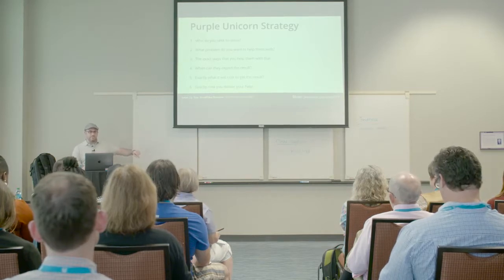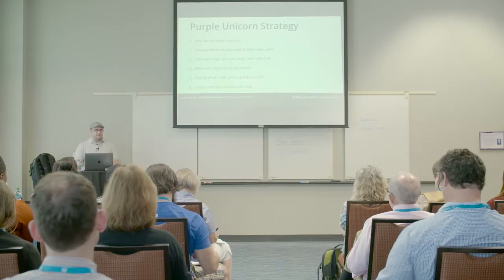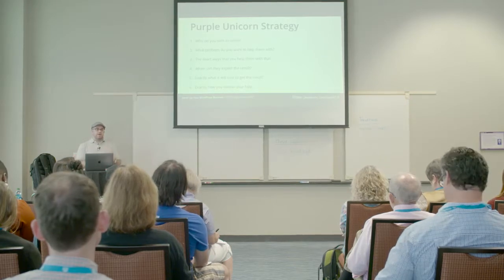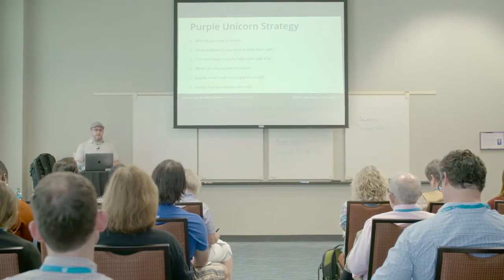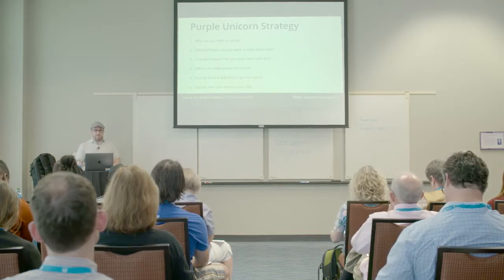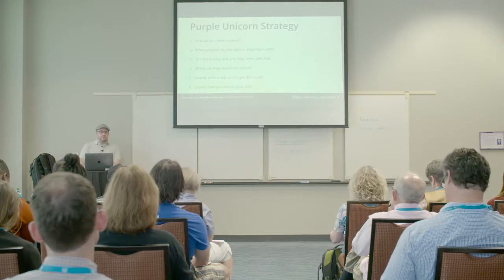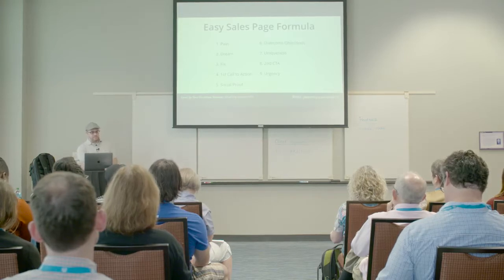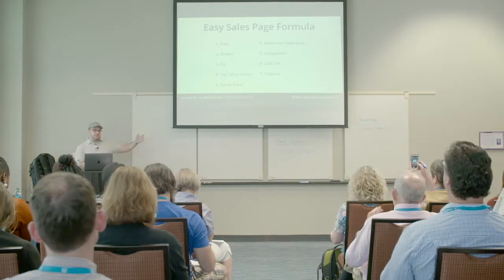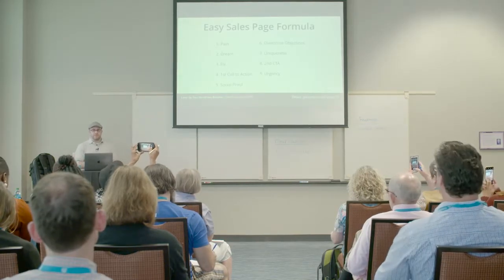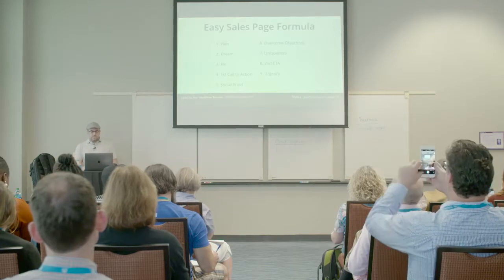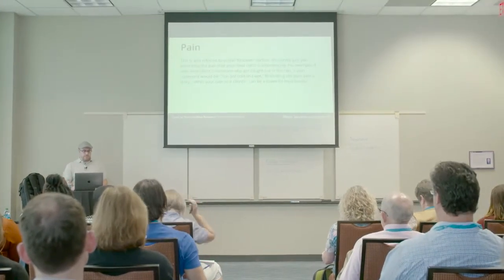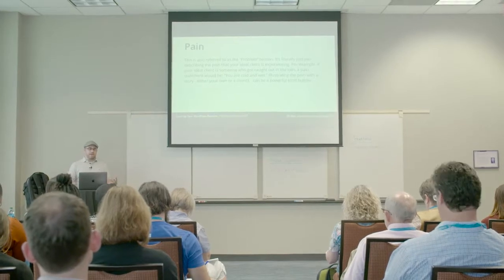Here's an overview of that again — that is the purple unicorn strategy. These are six critical steps that are going to get you clear on who you seek to serve, how you serve them, and how much you're going to get paid. Now we're going to move on to a very basic sales page formula. Here's my easy sales page formula overview — I do have another overview, so in case you miss this picture, you can get another.